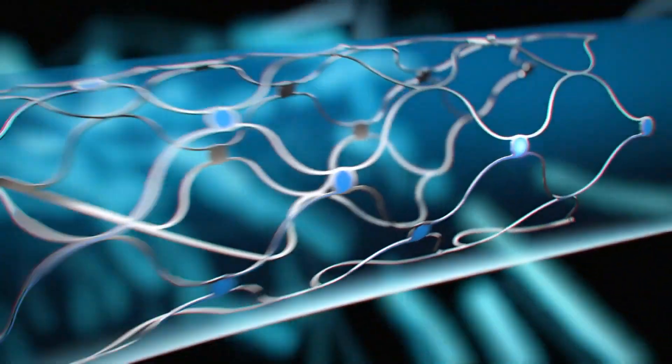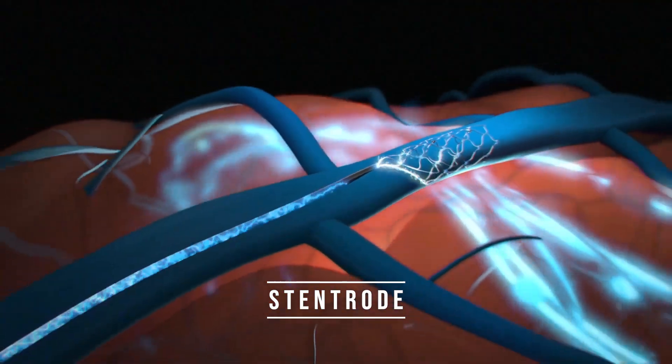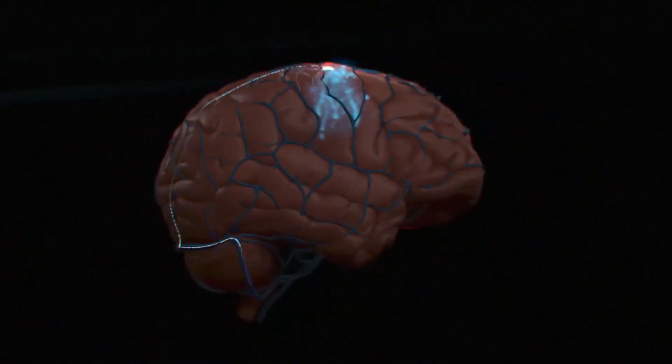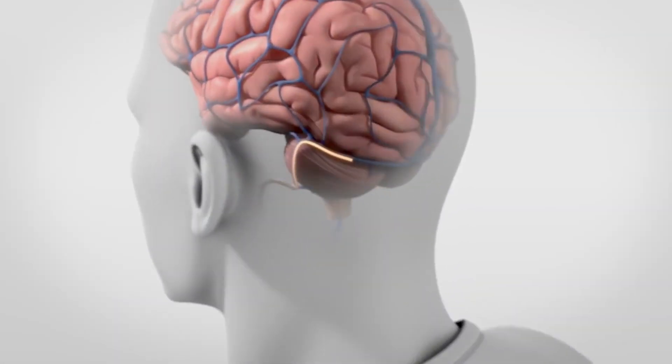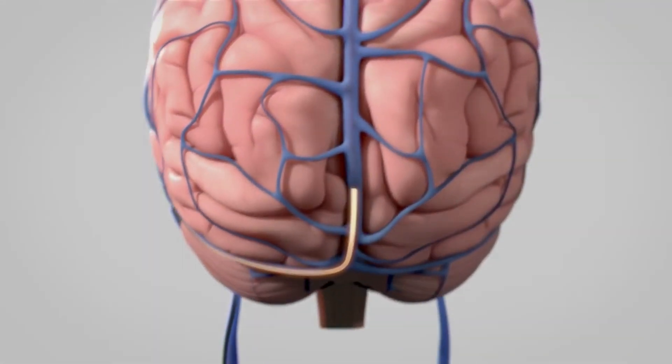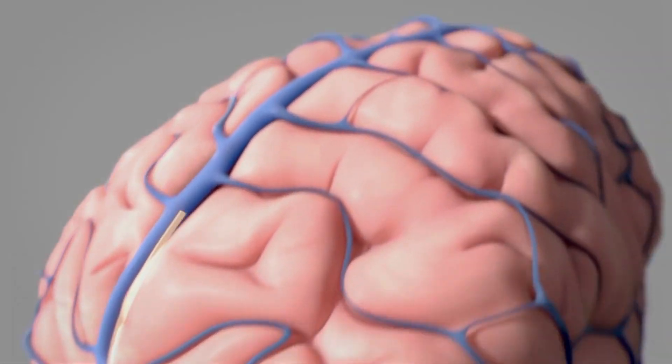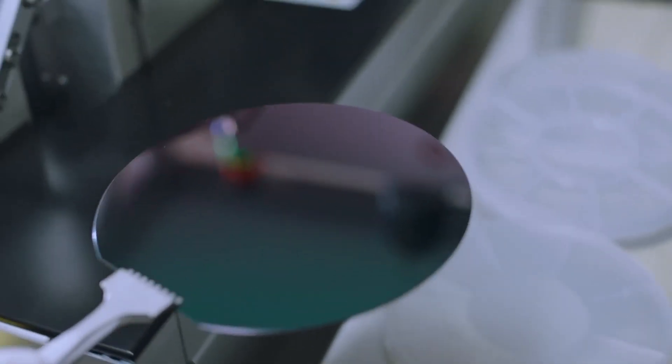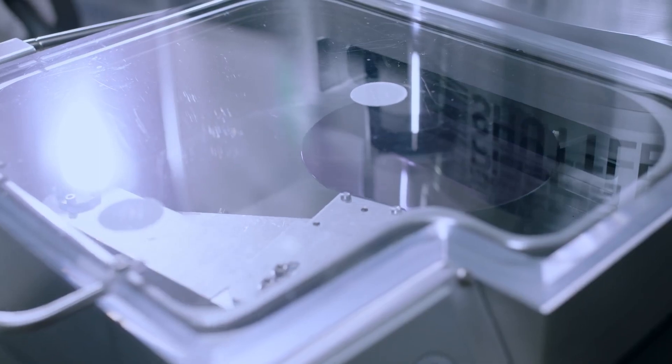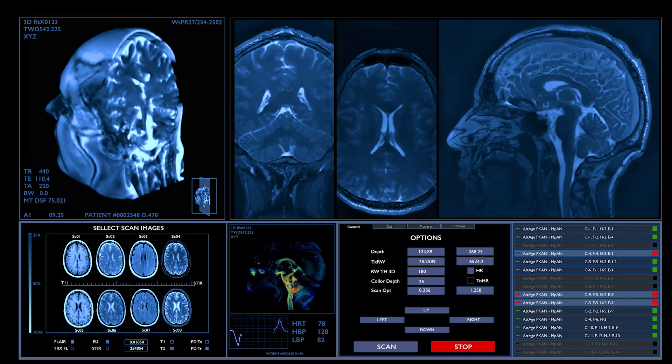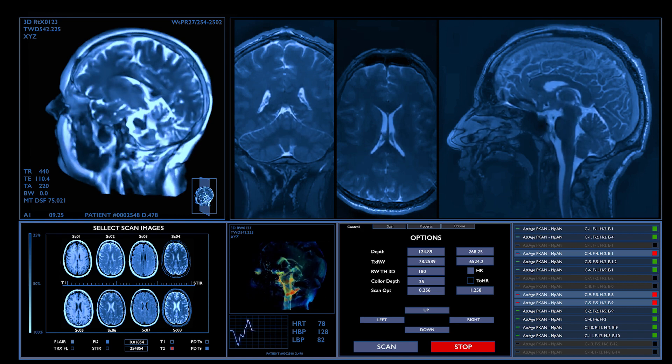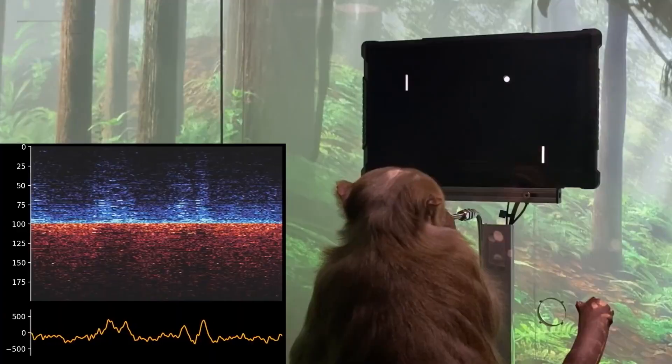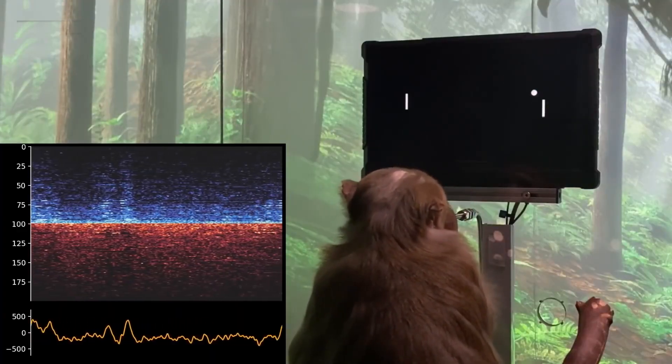Synchron's focus is on developing a minimally invasive BCI system called the stentrode, which is implanted in the brain via a blood vessel in the neck. The stentrode uses electrodes to record and stimulate brain activity, with the goal of restoring movement and communication to people with paralysis or other neurological disorders. On the other hand, Neuralink is developing a more invasive BCI system that involves implanting a chip with electrodes directly into the brain. Neuralink's initial focus is on developing BCIs that can help people with neurological disorders. But the company's ultimate goal is to create a symbiosis between humans and artificial intelligence, or AI, by enabling direct communication between the brain and computers.